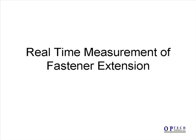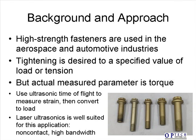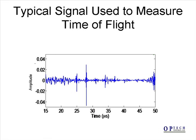The final application is real-time measurement of fastener extension. The photo shows a selection of fasteners used for aircraft assembly. Each fastener has a specified value of load or tension during tightening of the nut, but only torque can be measured during tightening, which can be influenced by friction. However, ultrasonic time of flight can be used to measure the strain during tightening, which can then be converted to stress or load. The temporal signals represent waves that travel to the opposite end of the fastener and return, and can readily be used to measure the change in time of flight that results from loading the fastener.